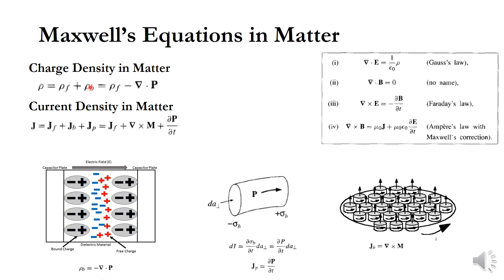So this is the real charge density — the net charge density. Therefore rho is equal to rho F plus rho B, which is equal to rho F minus del dot P. This is the real charge density.